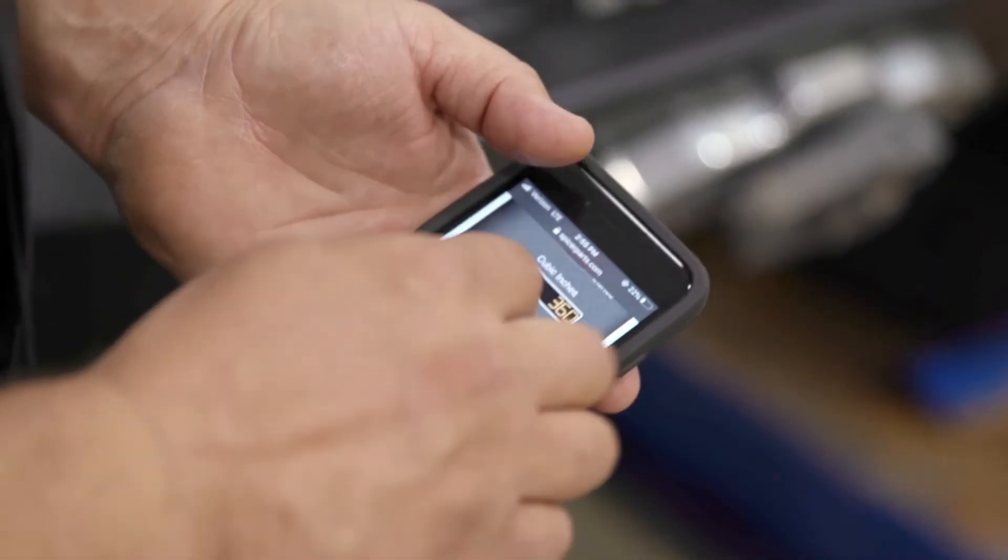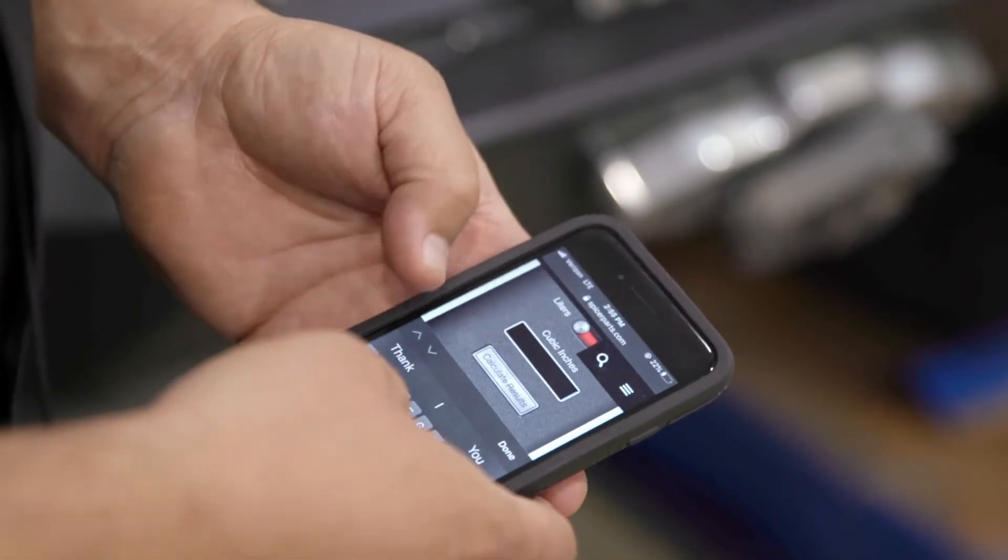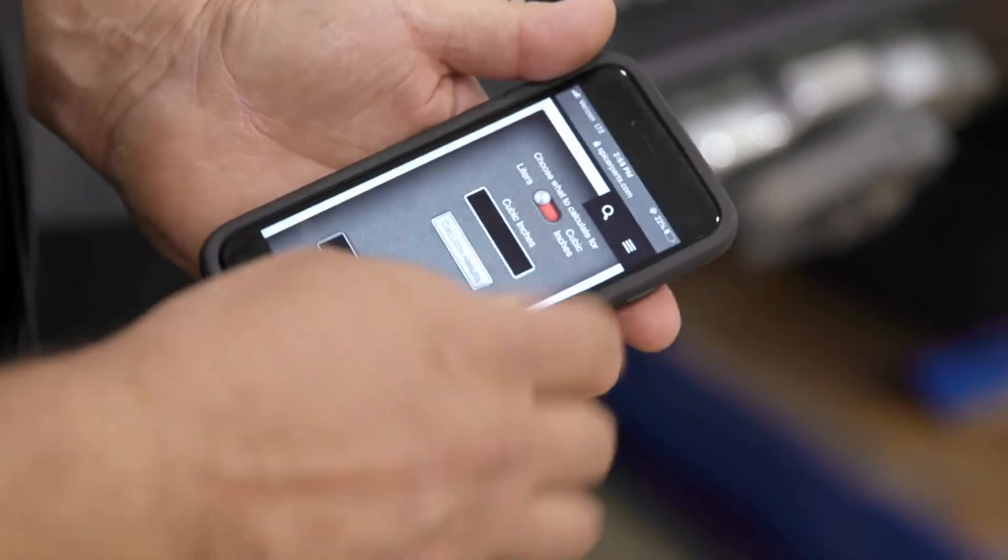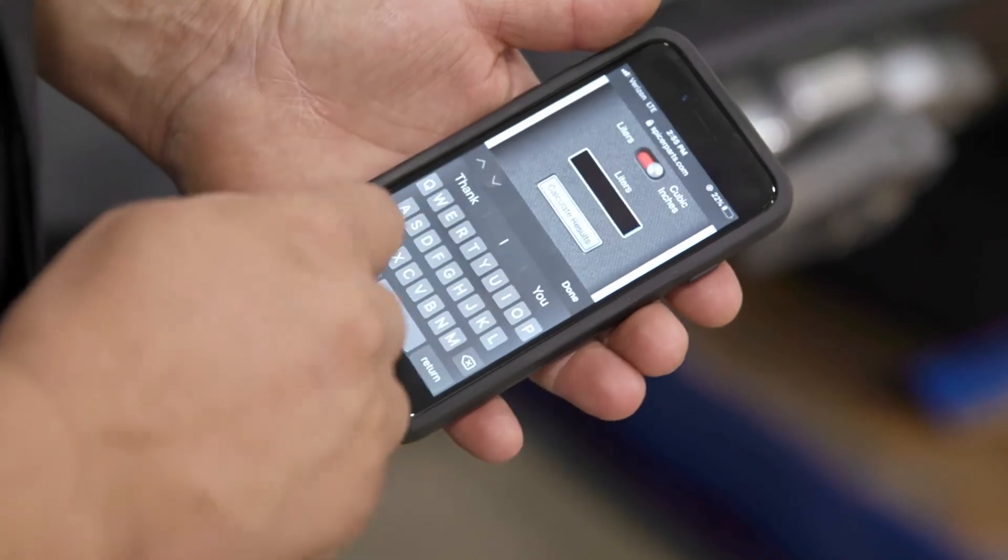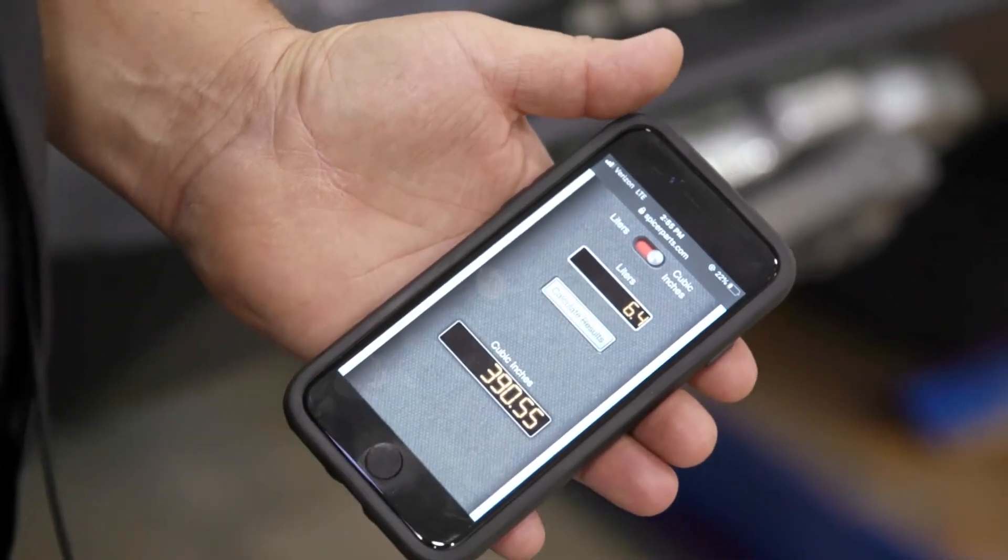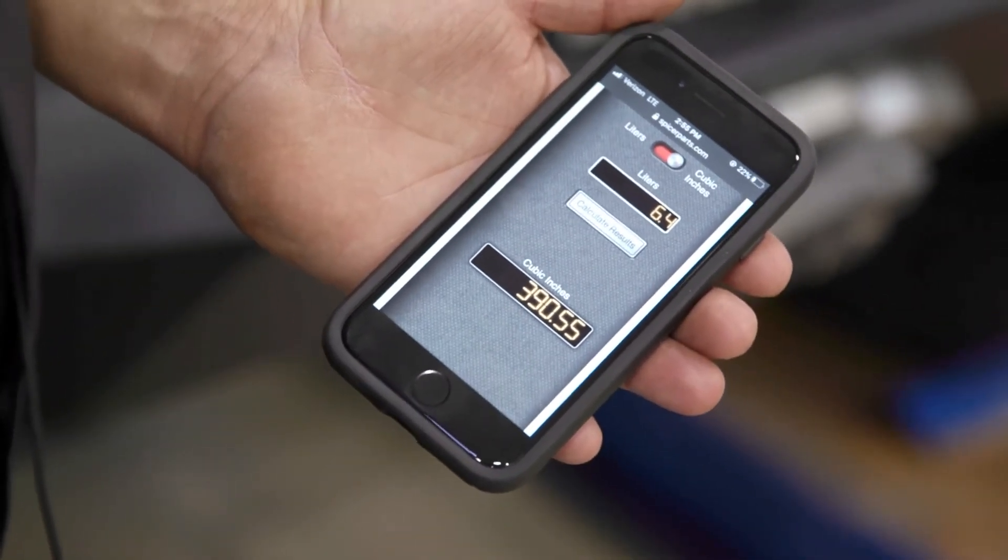Or if we want a more modern engine, we can go back to liters and say a 6.4 liter engine is about 390 cubic inches.